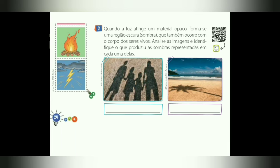Número 2: quando a luz atinge o material opaco, forma-se uma região escura, ou seja, uma sombra, que também ocorre com o corpo dos seres vivos. Analise as imagens e identifique o que produziu as sombras representadas em cada uma delas. Vocês vão escrever o que está produzindo a sombra na primeira imagem e o que está produzindo a sombra na segunda imagem.